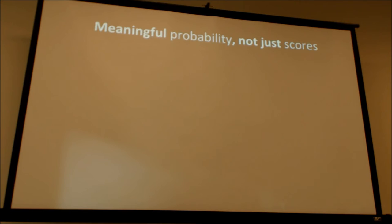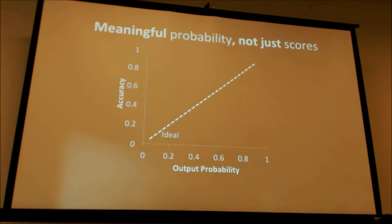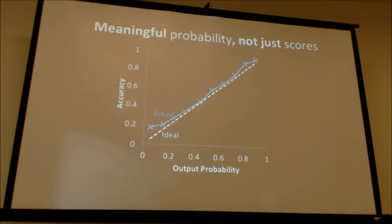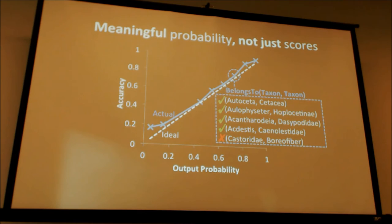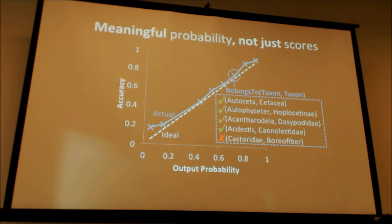We use calibration plots. We define what the answers mean independently of how we compute them — algorithmic independence. The x-axis is the output probability that DeepDive assigns to every random variable, and the y-axis is the accuracy. Ideally, if DeepDive is behaving well, everything is on the ideal line — the probability we report is proportional to accuracy. If I go to 0.8, I would expect roughly 80% of the facts in that bucket to be correct. That calibration property should hold basically independently of how we compute it.